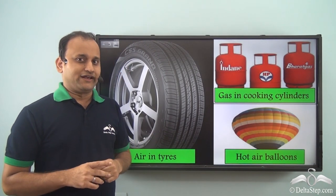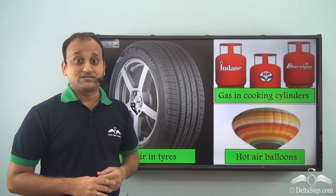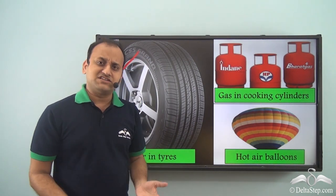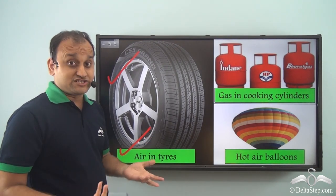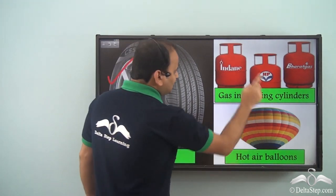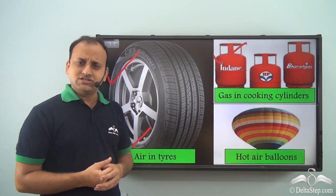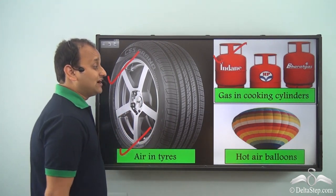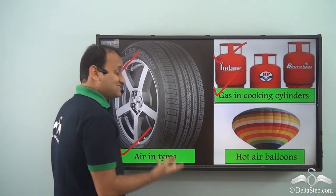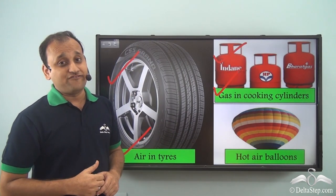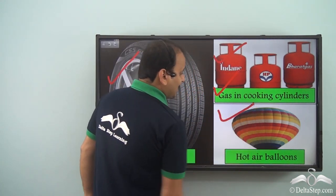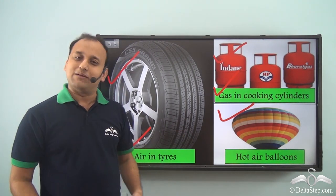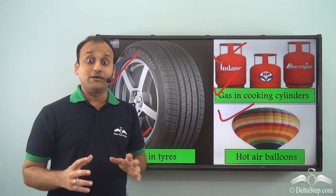Now where do you find gases? Even gases we find all around us and they are very important for us. For example, the tires of all buses and cars in which we travel are filled with air, which is a gas. What about the cylinders you see in kitchens? They are also filled with gas, used for cooking. And what about hot air balloons? Even they are filled with gases. So we cannot really cook or travel without the help of gases — they are so important and available all around us.